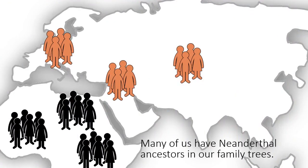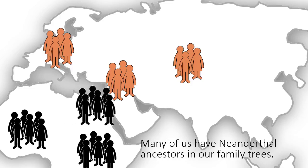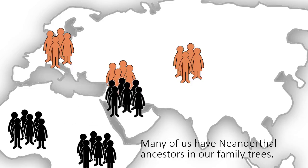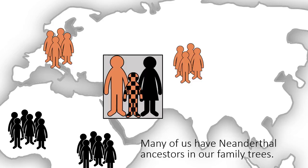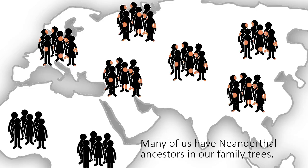Recent work has shown that many of us have Neanderthal ancestors in our family trees. Neanderthals were living throughout Europe and Asia when modern humans spread out of Africa. Modern humans and Neanderthals interbred, and the result is that present-day non-Africans inherit around 2 or 3% of their DNA from Neanderthal ancestors.